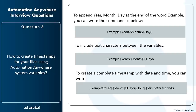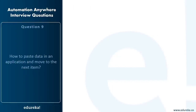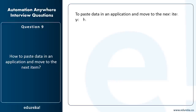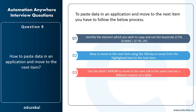How do you paste data in an application and move to the next item? First, identify the element you wish to copy and use the keystroke Ctrl+Down plus Ctrl+Right. Then move to the next item using the Tab key to move from the highlighted item to the next. Finally, use the Right Arrow to move to the next cell in the same row but a different column of the table. Note that some applications also support using the Spacebar to move to the next control or button.